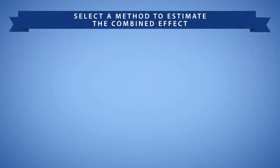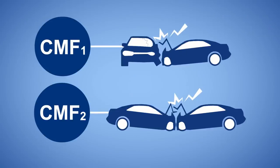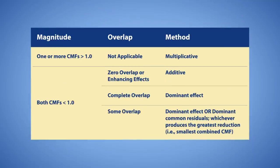At this point, you've considered the potential overlap and magnitude of effects. The last step before selecting a method is to determine the applicability of the individual CMFs. Specifically, identify the crash type and severity to which each CMF is applicable. Again, this may be different than the crash type and severity targeted by the countermeasure. If the CMFs apply to the same crash type and severity, use this table to select an appropriate method. If the CMFs apply to different crash types or severities, refer to the examples later in this video.